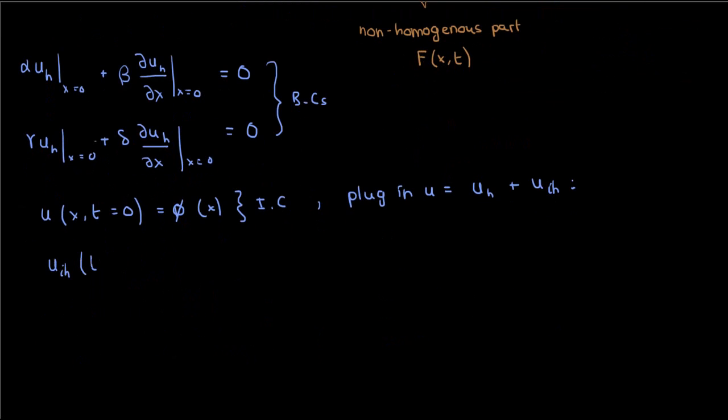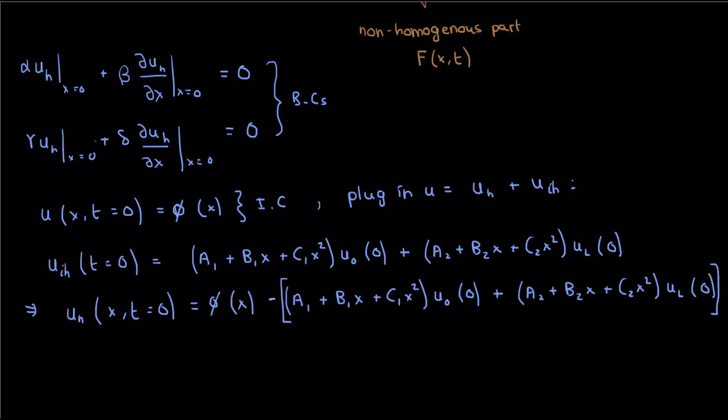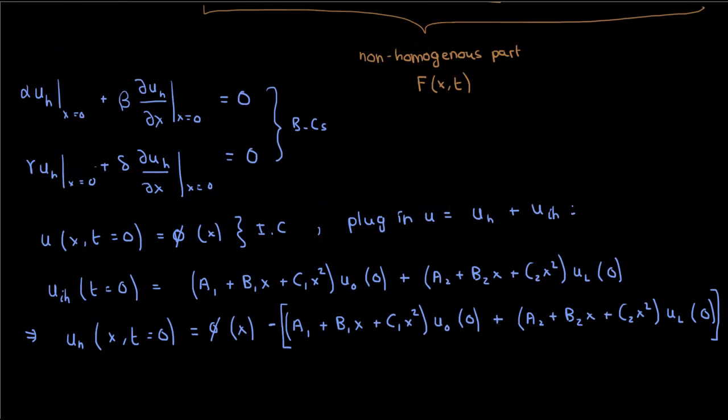At t equals zero, u sub ih is just a1 plus b1x plus c1x squared times u sub 0 at 0 plus a2 plus b2x plus c2x squared times u sub l at 0. So plugging this into the initial condition and isolating for u sub h gives this as the initial condition on u sub h.